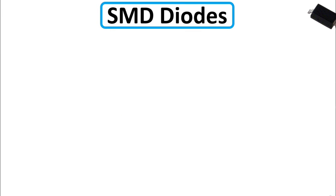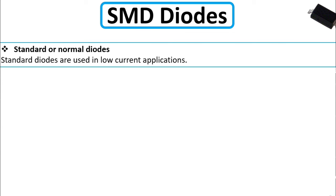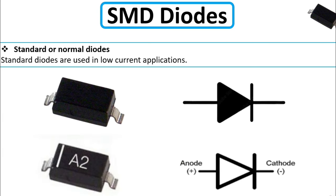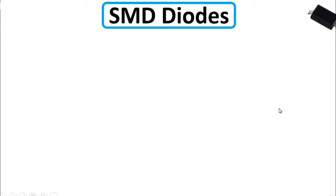Let's begin with the first type: standard or normal diodes. Standard diodes are used in low current applications. As you can see, they look like this with two terminals — here are some samples with anode and cathode.